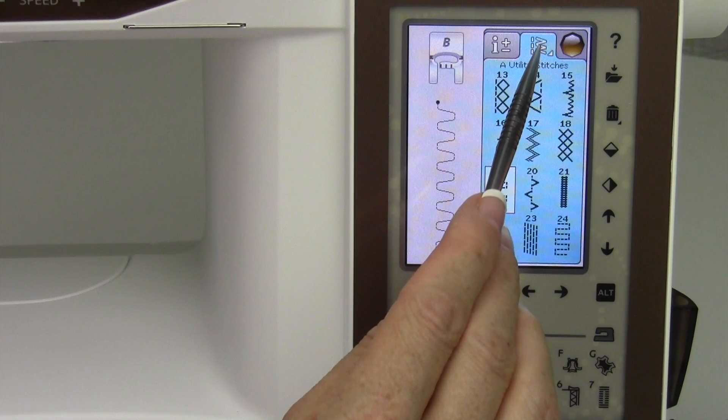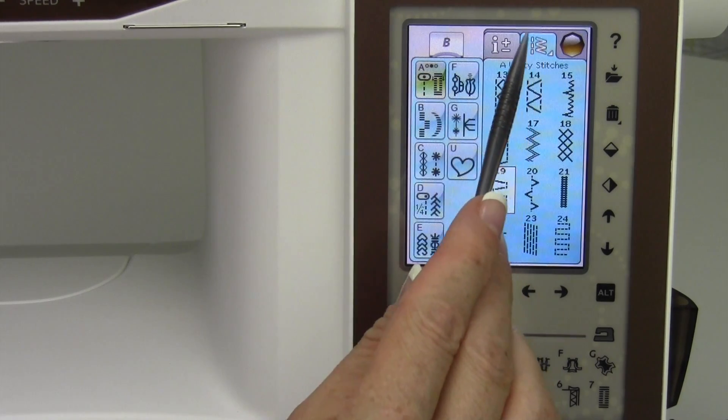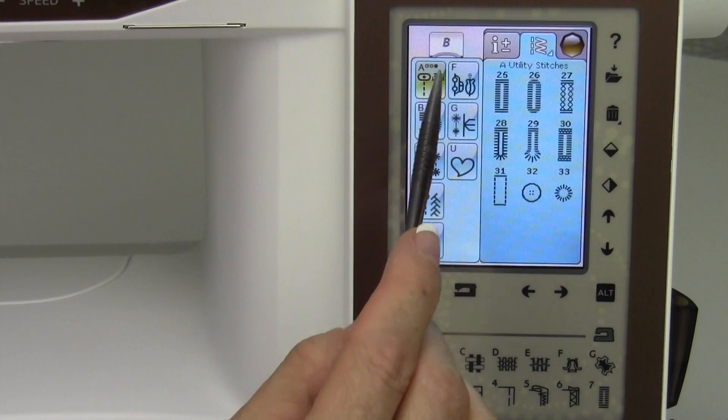Then if I want to come back to those areas of stitches, we can just touch and hold up here on the stitch menu, and you can rotate through.